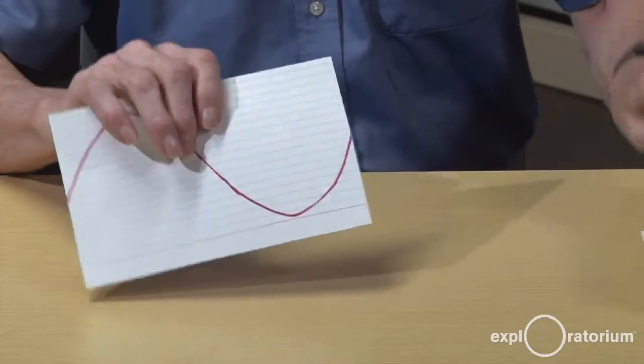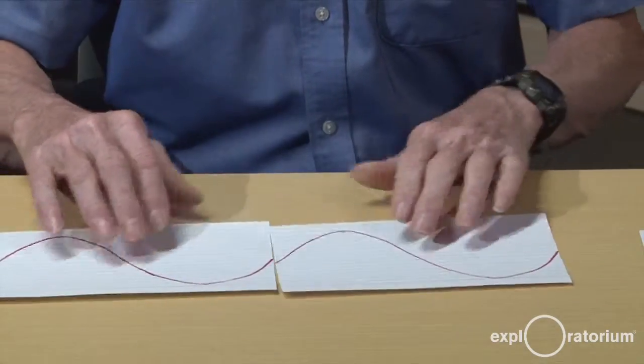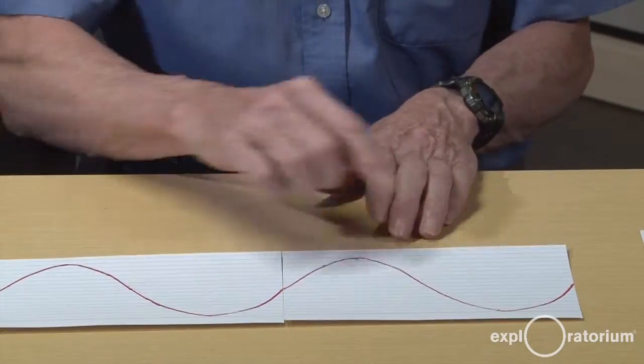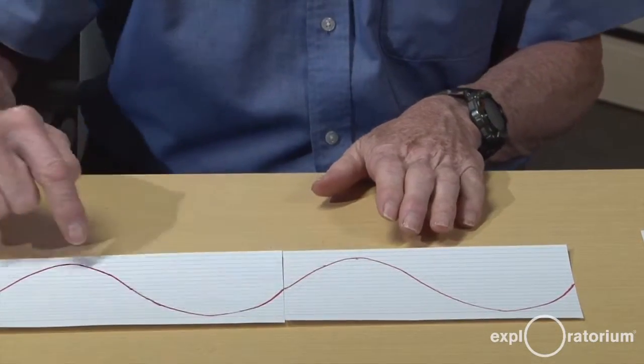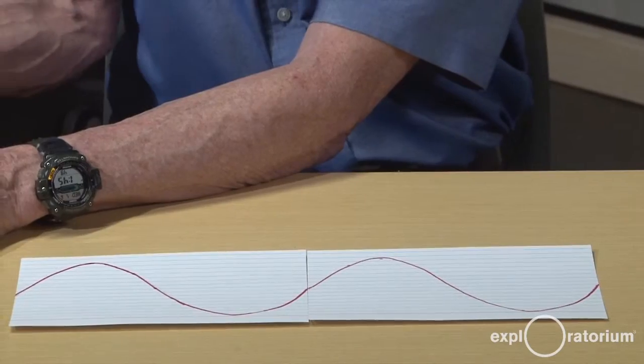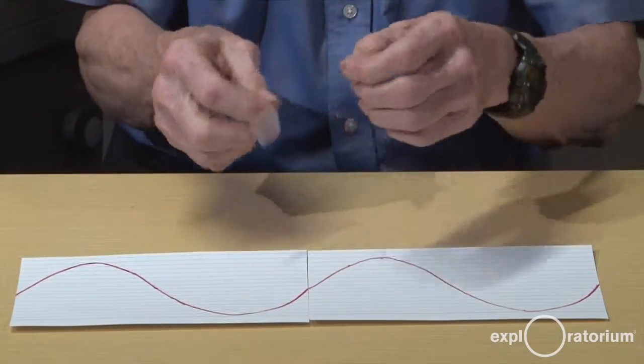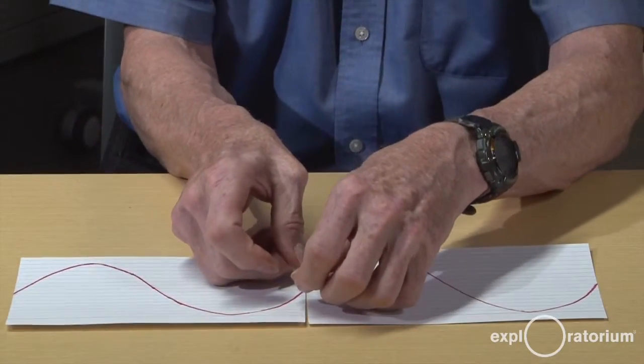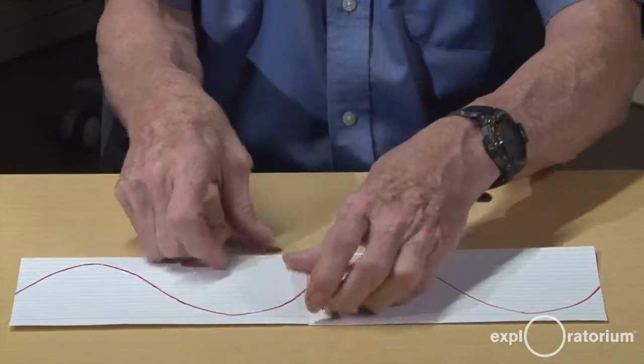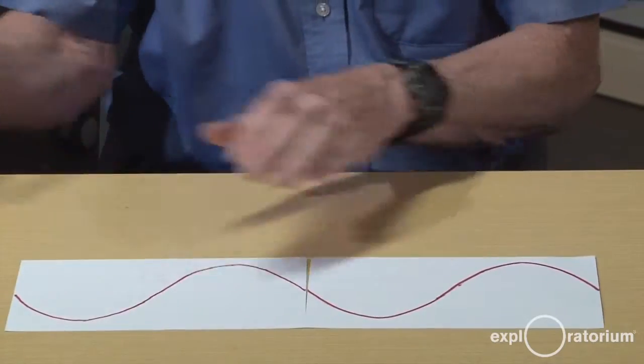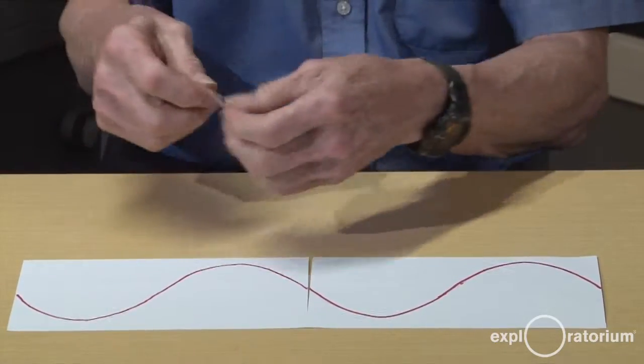Once you've made your 12 wavelengths, you're going to tape them together in two rows of six. Place them so that they flow smoothly from one card to the next and make sure they abut without overlapping. Then put the tape between them and flip them over and do the tape on the other side.